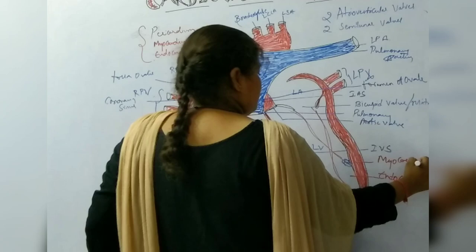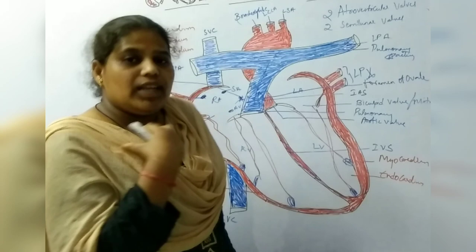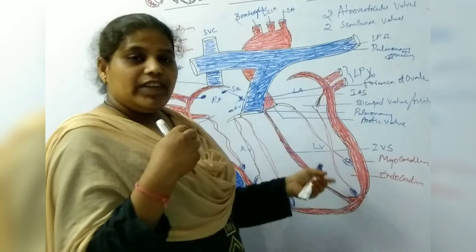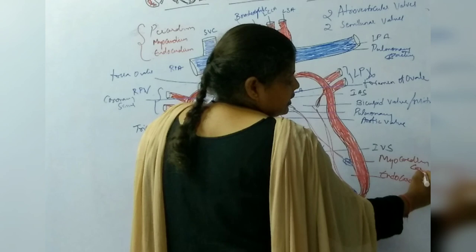On the right side we have a thin myocardium compared to the left side. The right ventricle only has to carry blood to the lungs for gas exchange, but the left ventricle has to pump blood to the entire body, so the left myocardium contains thicker and tougher cardiac tissue.